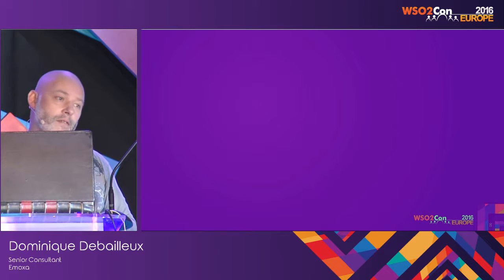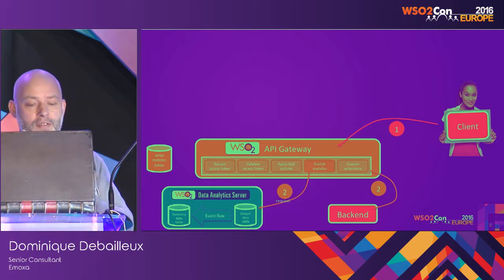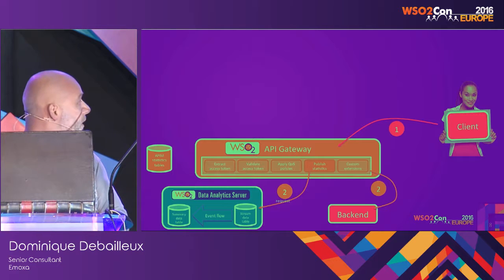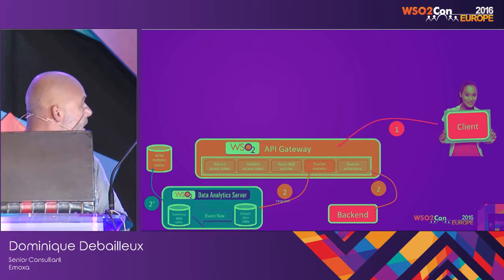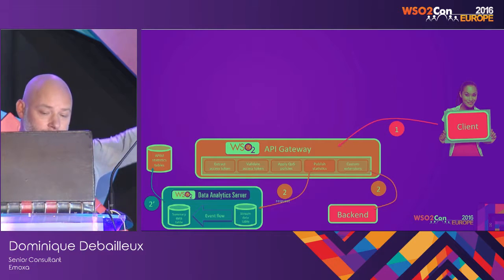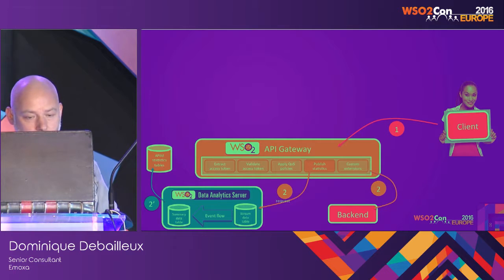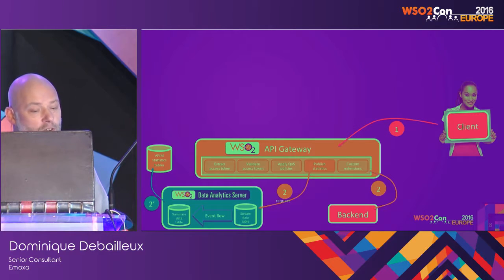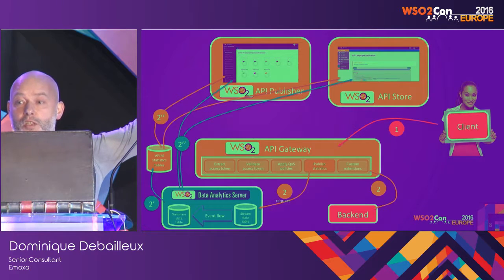Let's see how DAS integrates with this model. The story starts when the client invokes the API. The in-sequence of the API proxy is invoked, and the sequence sends statistics toward DAS and calls the back-end. At almost the same time, the input event is taken in charge by a batch analytics server inside DAS and summarized inside DAS tables. API Publisher and Store collect the statistics and display them in their own dashboards — so you use the API Manager Store and Publisher dashboards to get the statistics, not the DAS dashboards.